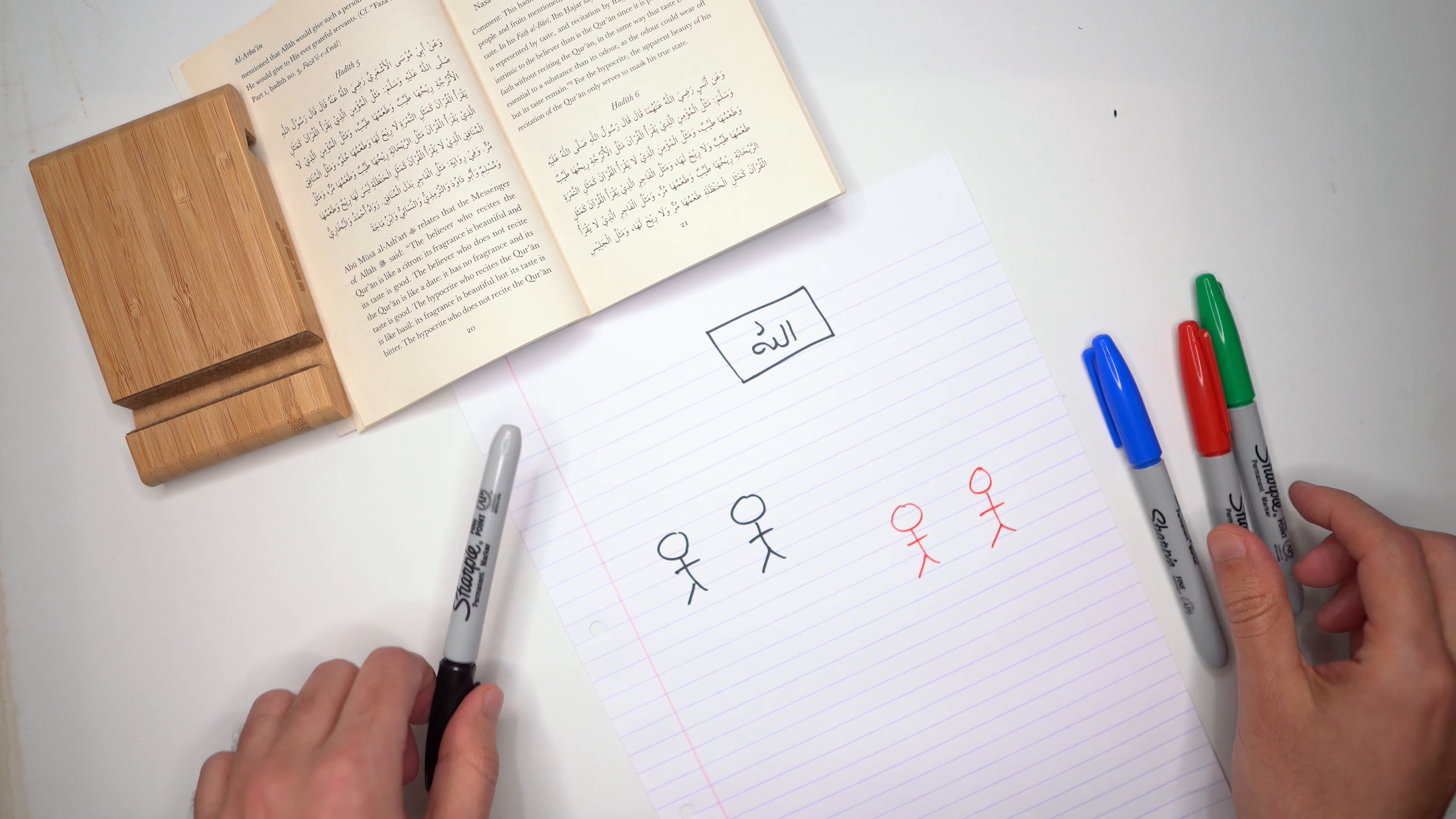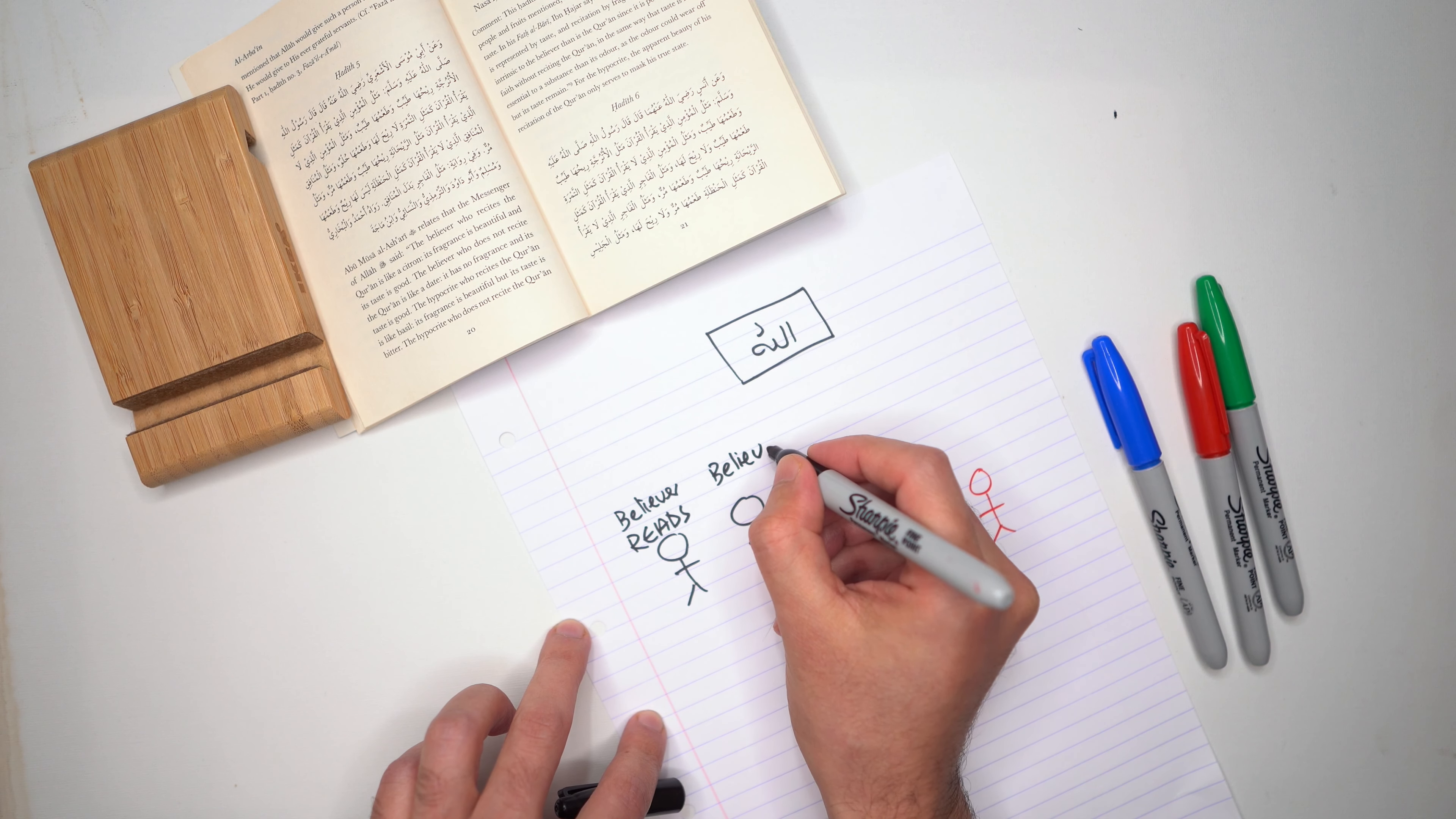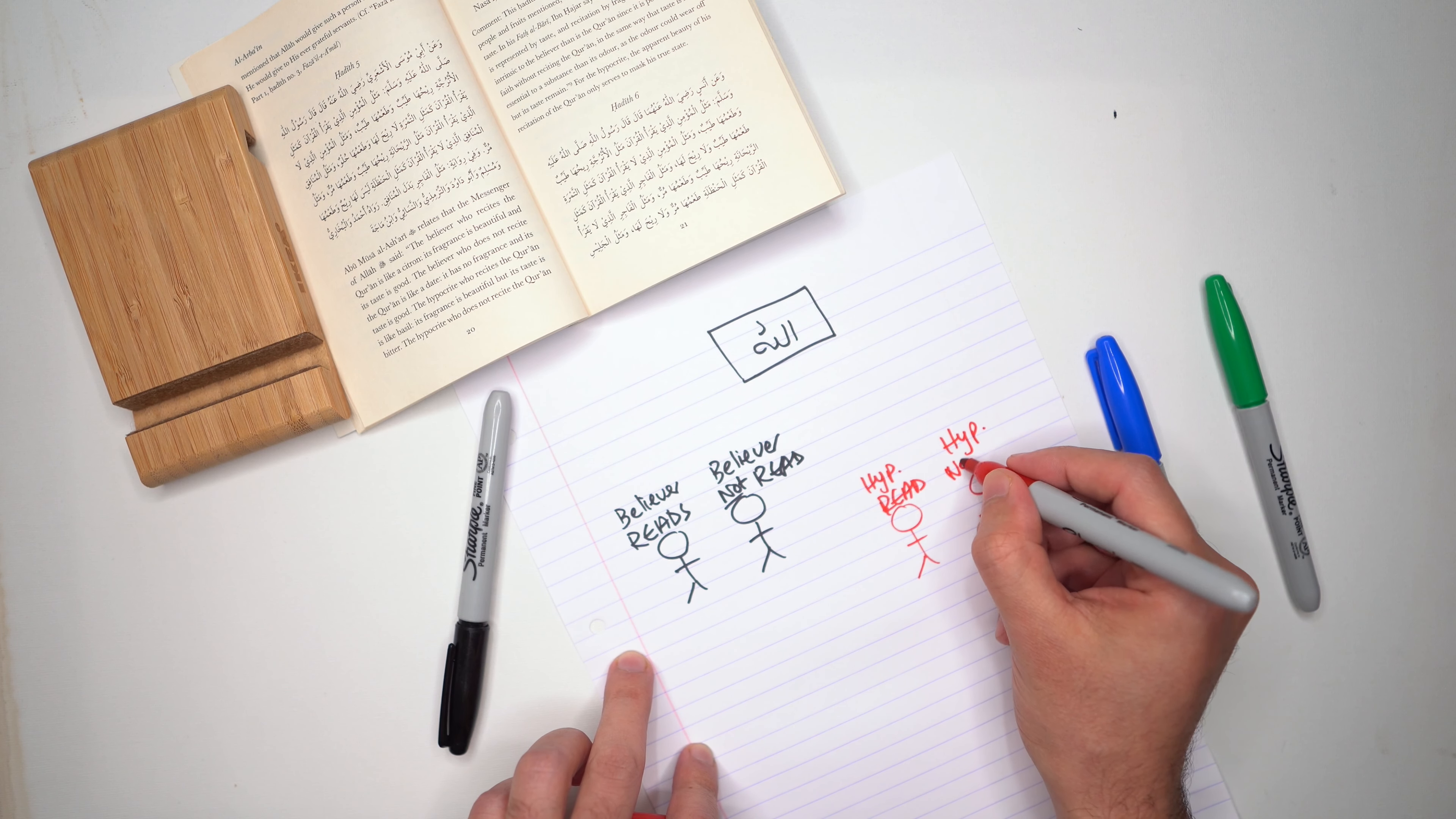So this is the example of a believer who reads the Qur'an, and this is the example of the believer who does not read. This is the example of a hypocrite who reads the Qur'an, and this example of a hypocrite who does not read.